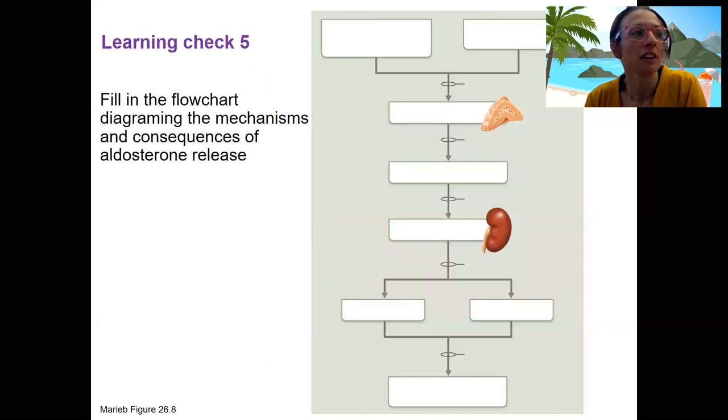Let's do another learning check. Fill in this diagram. I will give you nothing. You can do it. Fine. I'll give you the end result which is going to be homeostatic levels of sodium and potassium. Okay. I think you can do it. I'll tell you kidney tubules. Fine. The distal collecting duct.